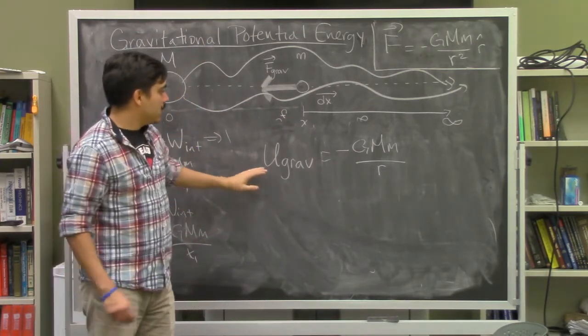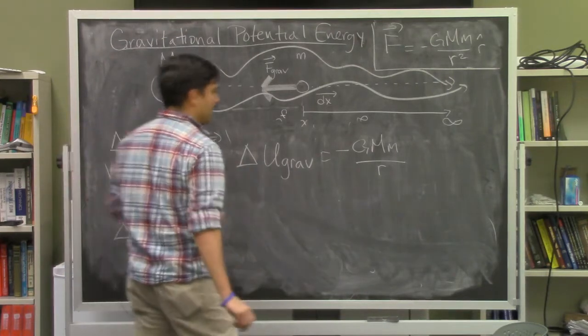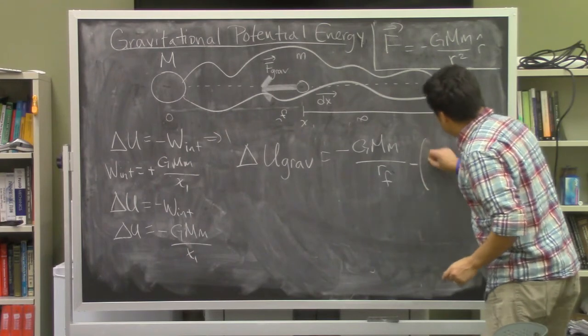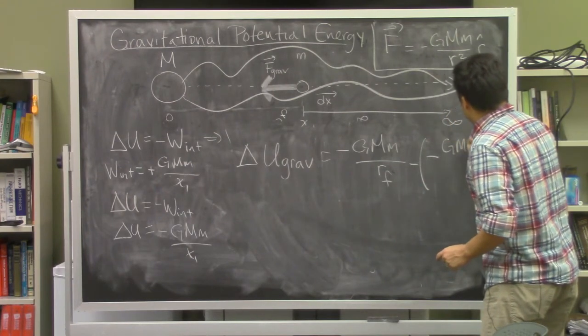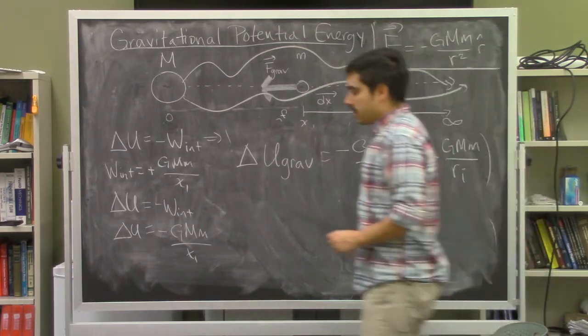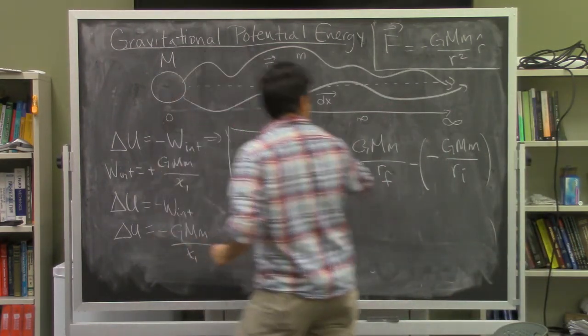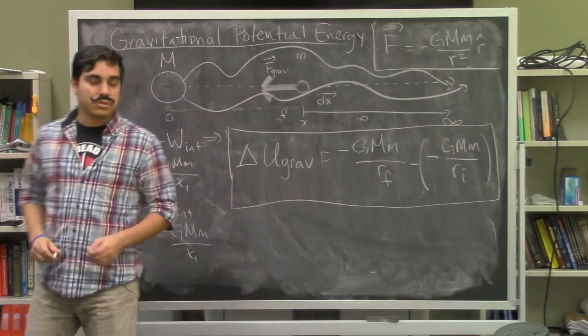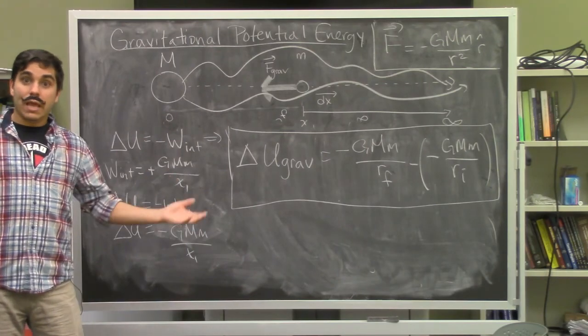When talking about the change in potential energy, what matters is that we have a final location from which we subtract the initial potential energy. This is the generalized form of gravitational potential energy.